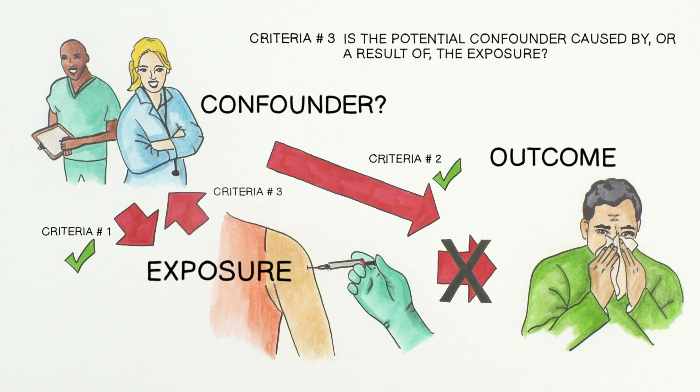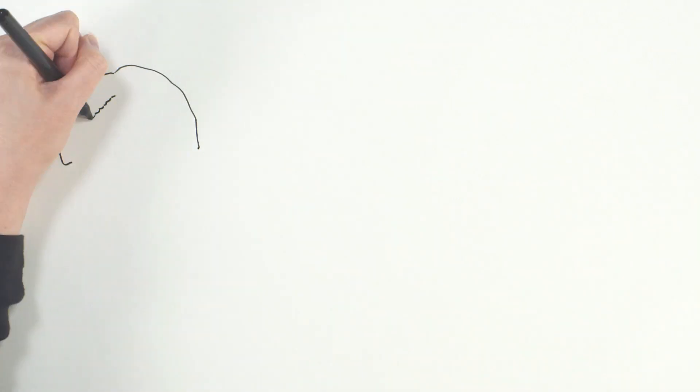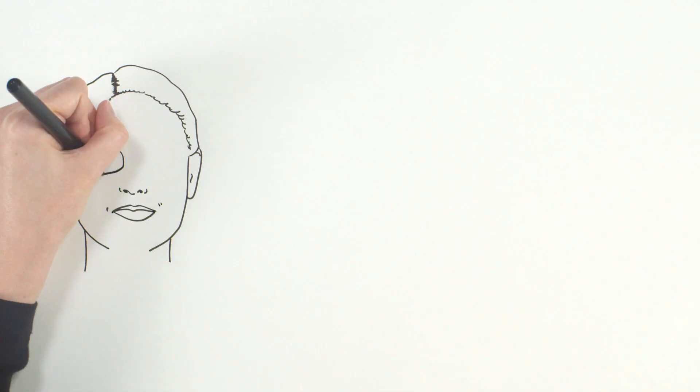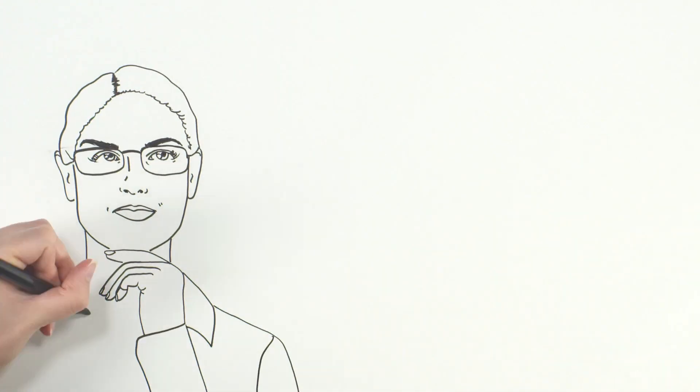Finally, we ask: is the potential confounder caused by or a result of the exposure? In this case, the answer is obviously no. One does not become a health professional because they receive the flu vaccine. Therefore, we can conclude that occupation is a confounding variable of this relationship.